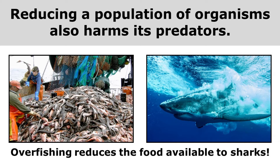Overfishing is another example of how reducing a population of organisms also harms its predators. Overfishing reduces the food available to sharks, and this causes the shark population to decline.